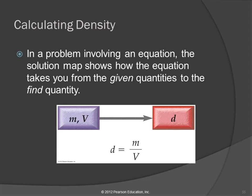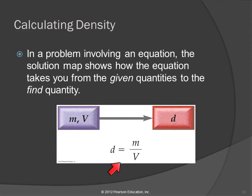Here's how the solution map looks for this. We're given two pieces of information and we use both of them to calculate the density. Instead of a conversion factor, we have an equation. There are two general kinds of problems: ones where it's dimensional analysis — converting units — and the other kind where an equation is involved. This is that other kind.